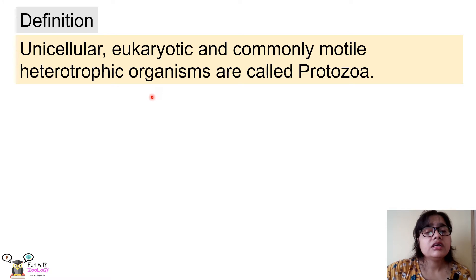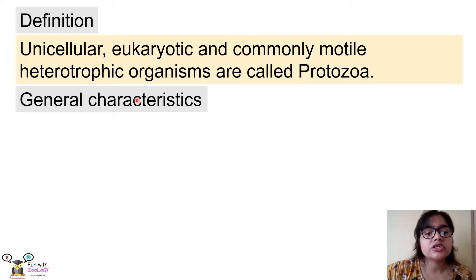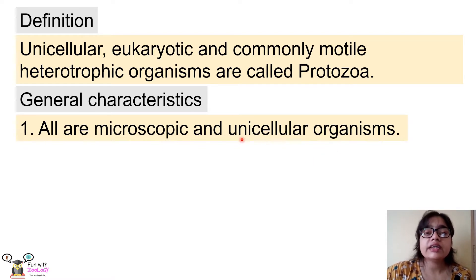A very easy trick: if you forget the definition, just recall all the characters of that organism and frame the definition using those characters. Next we shall start with the general characteristics of phylum Protozoa. The first characteristic is that they are all microscopic and unicellular organisms. 'Uni' means one and 'cellular' means cell, so all protozoans are made up of only one cell.